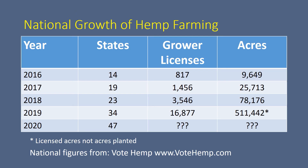This is just a chart of the states that are growing hemp and how this has increased over the years. In 2020, 47 or 48 states will be growing hemp. Every year since 2014 those numbers have continued to escalate. The 511,000 in 2019 is the number of licensed acres applied to grow — that is not the number of acres that were actually grown. But again, it just shows the interest in planting hemp around the country has continued to evolve very rapidly.